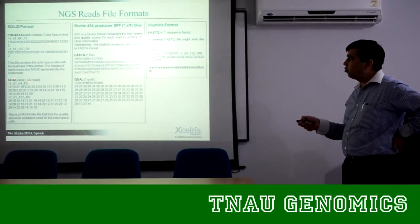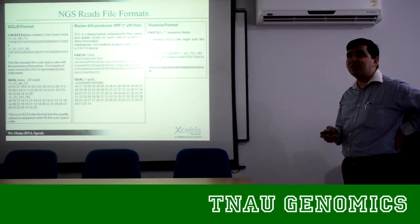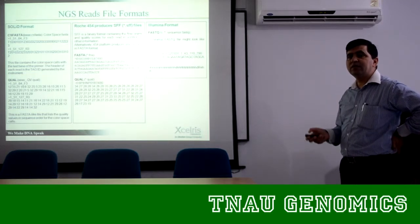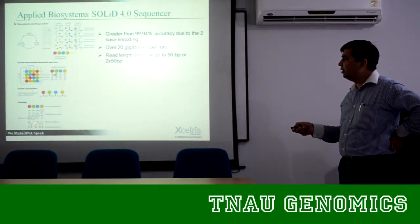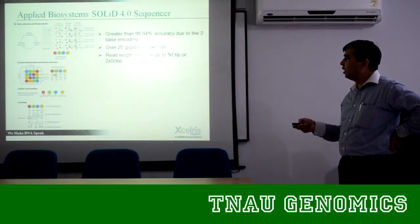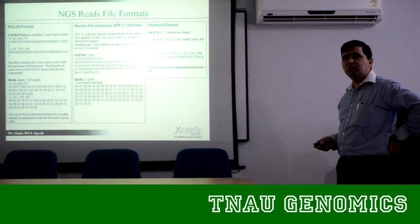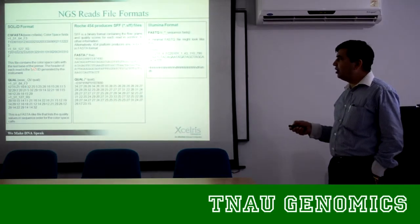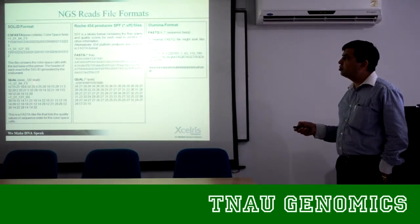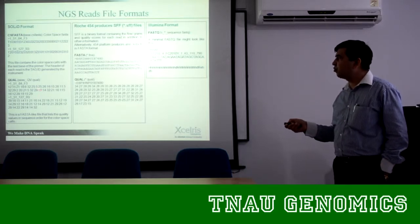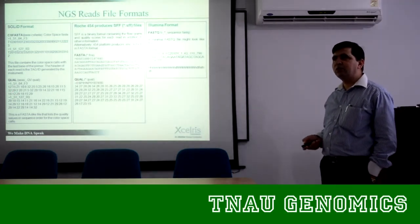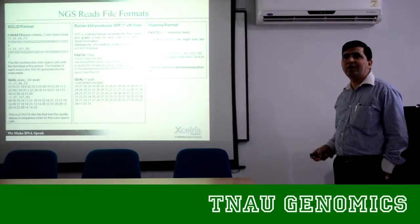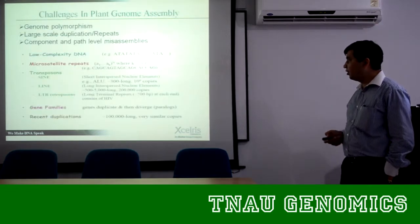SOLiD outputs a color space FASTA, not a direct nucleotide sequence FASTA. It comes in a 0, 1, 2, 3 matrix format: 0 indicates AA, GG, CC, TT combinations and each number represents a dinucleotide pair defined by these parameters. This is how they decode the sequences from 0, 1, 2, 3. Importantly, the quality values from SOLiD cannot be directly compared to Illumina quality values — this is a color space quality value, not a nucleotide space quality value. You have to convert this value back into nucleotide space quality value.